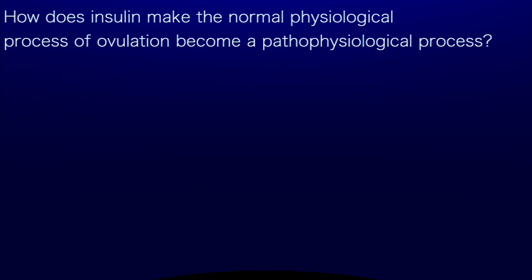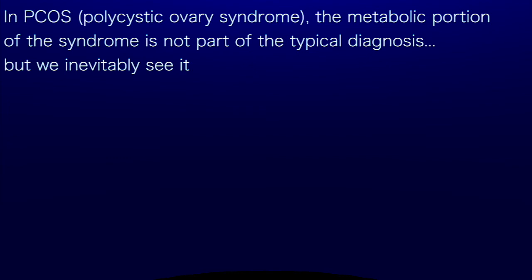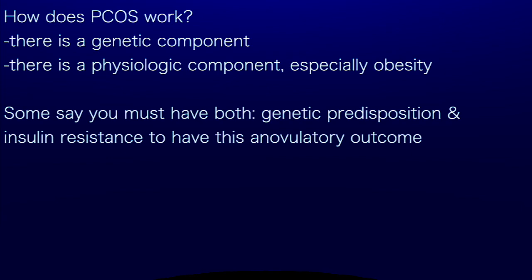Summary: Dr. Steve Cole explains that PCOS — polycystic ovary syndrome — has three main categories of disorder: one, oligomenorrhea, longer and infrequent menstruation; two, hyperandrogenism, high testosterone; and three, many cysts on the ovaries. In association with PCOS, insulin resistance is a major factor, though it's not part of the typical formal diagnosis — but we inevitably see it. There is a genetic component and a physiologic component, especially obesity. Some say you must have both genetic predisposition and insulin resistance to reach an anovulatory outcome.